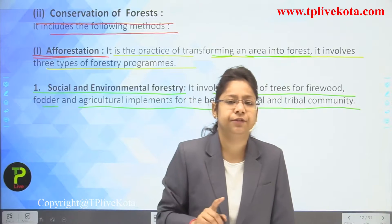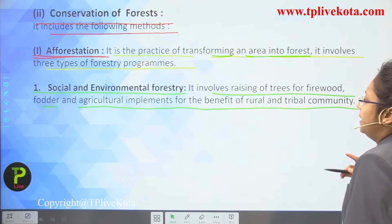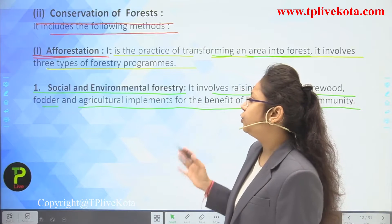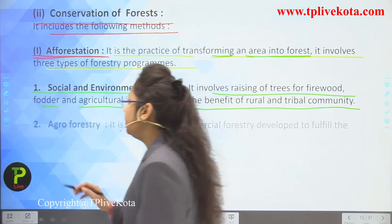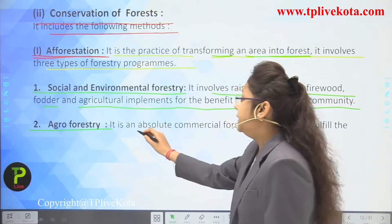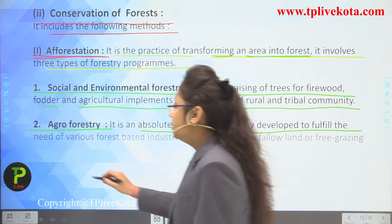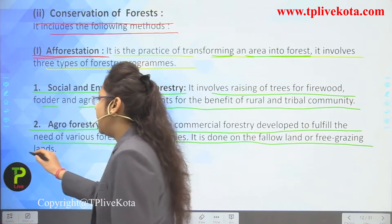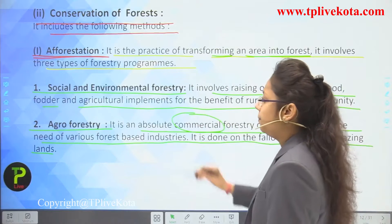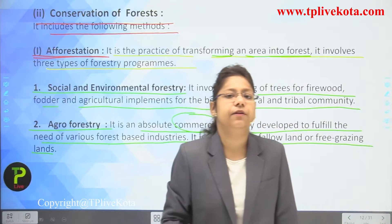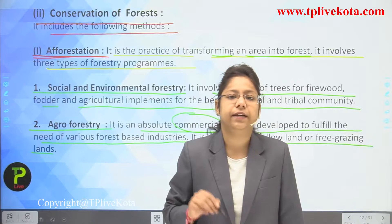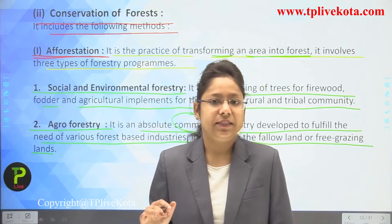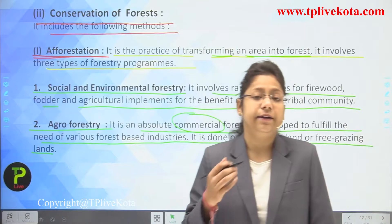For tribal and rural communities, firewood, fodder, and agricultural implements are daily needs covered by social and environmental forestry. The second method is agroforestry — a commercial forestry developed to fulfill the needs of various forest-based industries. It is done on fallow land or free grazing lands, where the soil fertility is checked, plants are grown, and products are sold commercially.